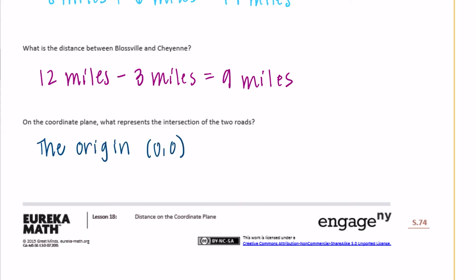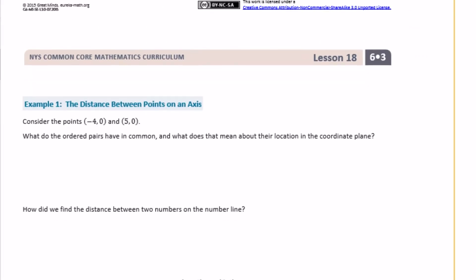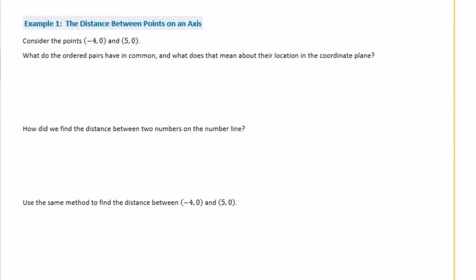What represents the intersection of the two roads? That point right there would be represented as the origin — we could call it zero, zero. So the intersection is the origin.